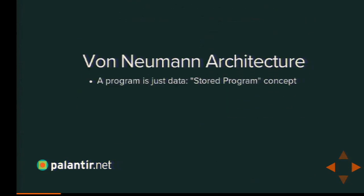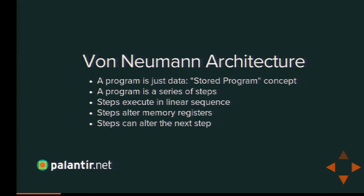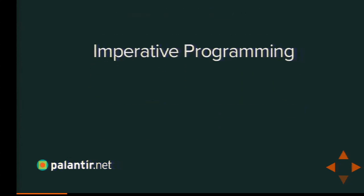Von Neumann architecture is the idea of a stored program — a program is simply data, a series of steps followed in order, linearly, one step after another. The job of each step is to alter a value in some place in memory. And one of the things you can alter is the place that says what step to run next. That gives you enormous power. That is how all computers work today. This leads to a concept called imperative programming — in the linguistic sense of giving commands: go here, do this, add that, set that, print that.